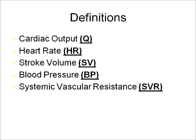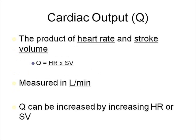Cardiac output is abbreviated Q, heart rate HR, stroke volume SV, blood pressure BP. Systemic vascular resistance is SVR.